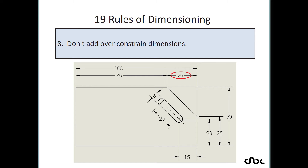Rule number 8: do not add over-constrained dimensions. This is similar to the previous rule. If you have placed the overall size, then you should use either the 75 or the 25 — you cannot place both together because you already have the overall size. Avoid over-constrained dimensions.